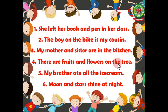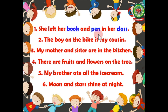Let's begin. Number one: she left her book and pen in her class. Identify the nouns and underline them. Let's check the answer. Book — name of a thing, so noun. Pen — name of a thing, so noun. Class — name of a place, so noun. We will underline book, pen, and class in sentence one, as all these are naming words.